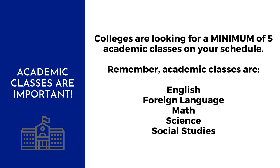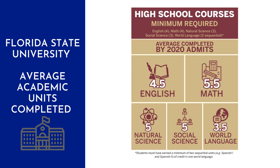Colleges are looking for a minimum of five academic classes on your schedule each year. Remember, academic classes are in the English, foreign language, math, science, and social studies departments. You want to aim for a minimum of five academic classes, but depending on the schools you are planning on applying to, many of our students choose to take six or seven academic classes. As an example, here is a graphic from the Florida State University Admissions website. While the minimum requirements to be accepted to FSU are as just discussed, those minimums are not typical of an admitted student — for example, instead of three social studies classes, the average admit has taken five. When it comes to college admissions, students should not be thinking about the minimum they can do. Instead, they should be thinking about how they can set themselves apart and how they can be best prepared for success on the college campus.